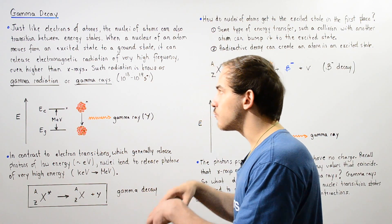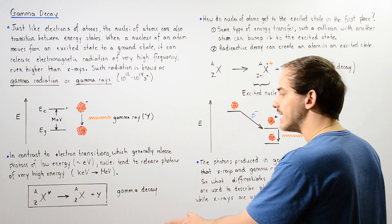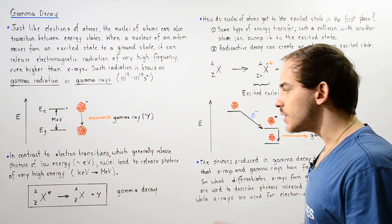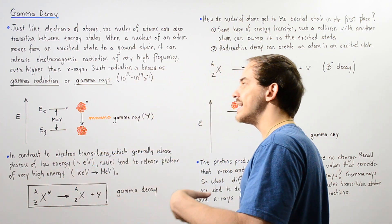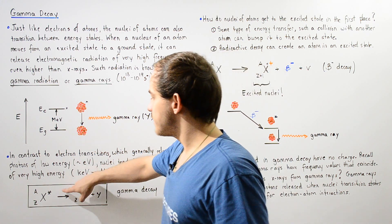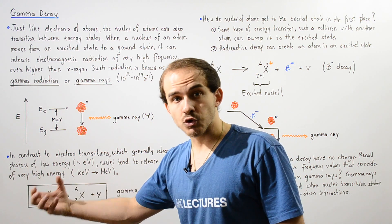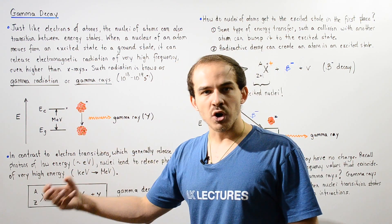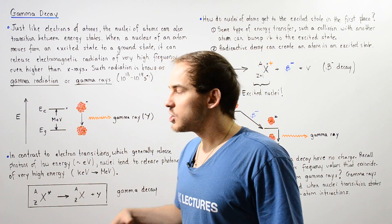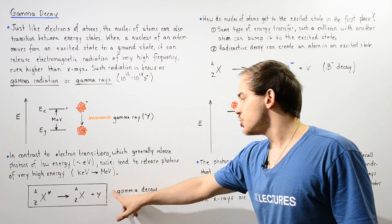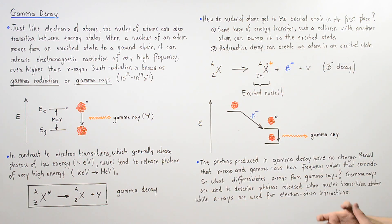This type of reaction in which a nucleus releases a gamma ray is known as gamma decay. We have a nucleus in an excited high energy state, given by the asterisk, that decays into a nucleus in the ground state or lower energy. In the process, it releases photons of electromagnetic radiation — gamma rays — which have very, very high frequencies and carry a lot of energy.